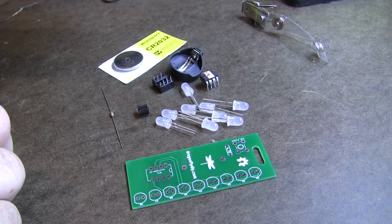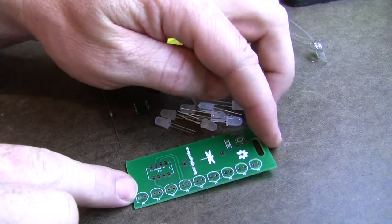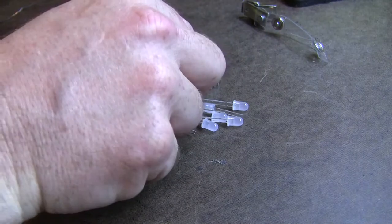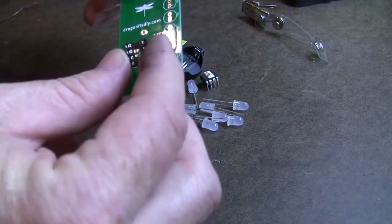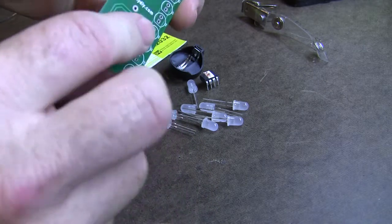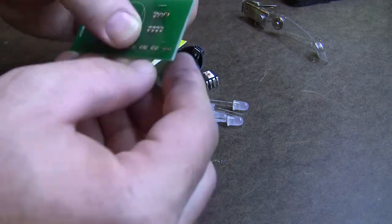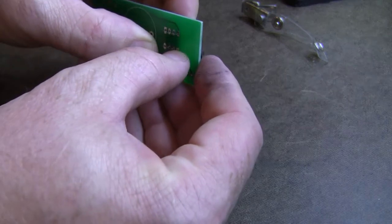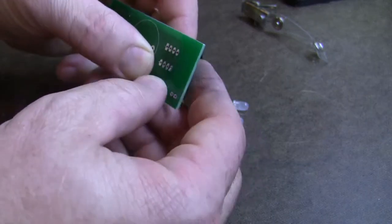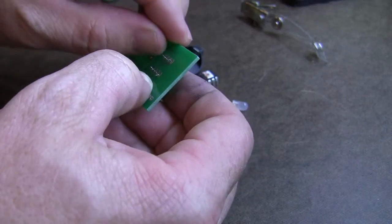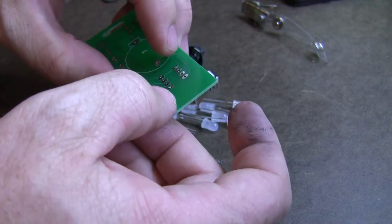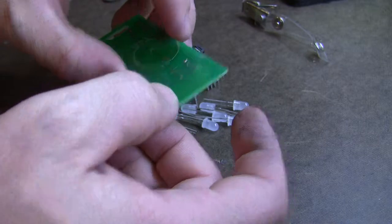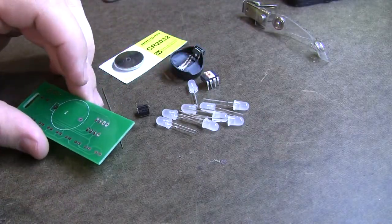To assemble it, the first thing you probably want to do is put in the IC socket. It's the shortest thing, so it's going to be the hardest thing to hold in. Flick down two diagonal wires there to hold it in place while you solder it in.